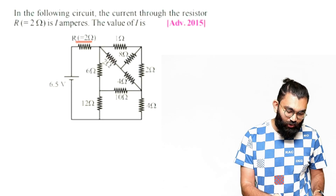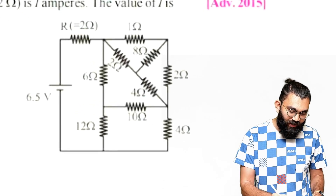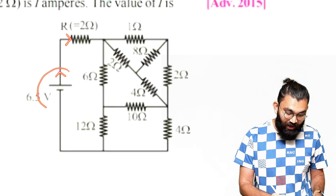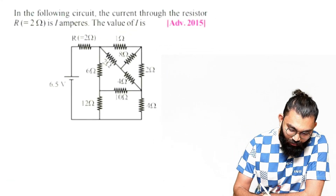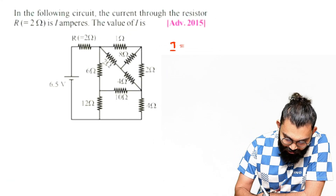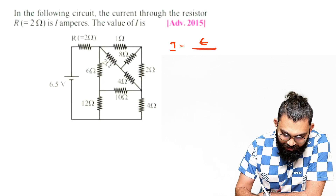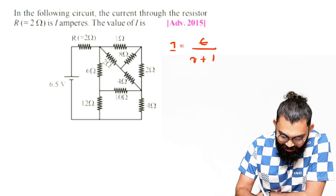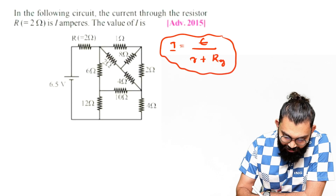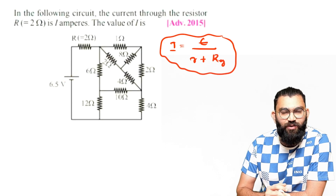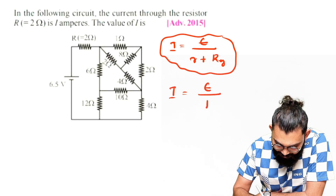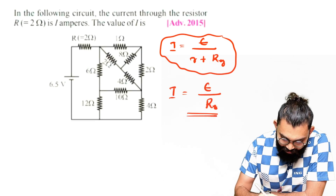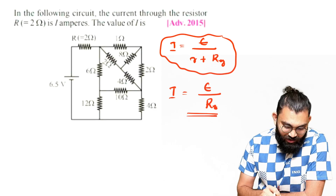We need to find the current through the 2 ohm resistor. The current passing through this 2 ohm resistor is the same as the current which comes out from the cell, because there is no junction between the resistance and the cell. So the net current from the battery i is equal to EMF divided by effective resistance. There is no internal resistance given, so internal resistance is negligibly small and can be neglected.